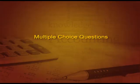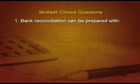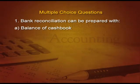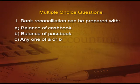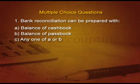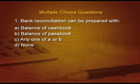Now let us see some multiple choice questions. Question number one: bank reconciliation can be prepared with A) balance of cash book, B) balance of pass book, C) any one of A or B, or D) none of these. Very simple — C part. You can start with anything.